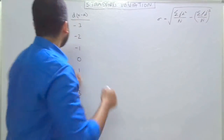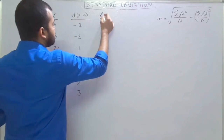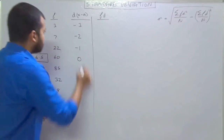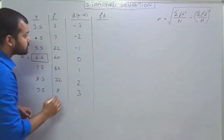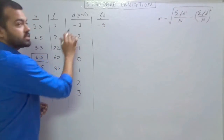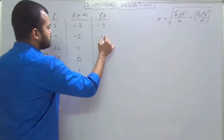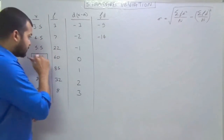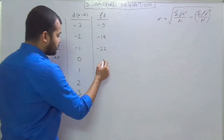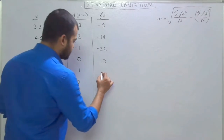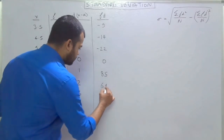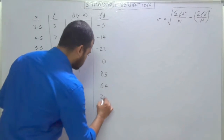The next column is fd — we multiply the f column and the d column. So: 3 × (−3) = −9, 7 × (−2) = −14, 22 × (−1) = −22, 60 × 0 = 0, 85 × 1 = 85, 32 × 2 = 64, 8 × 3 = 24.